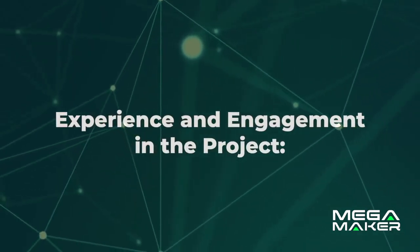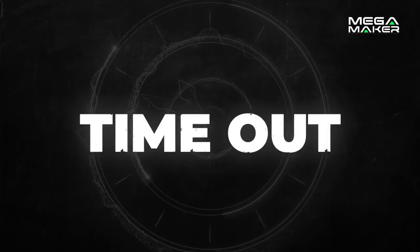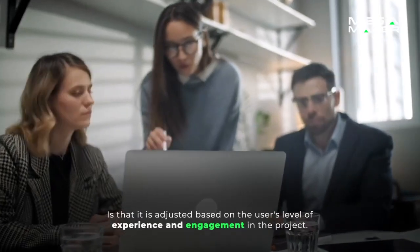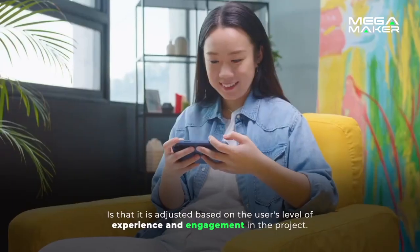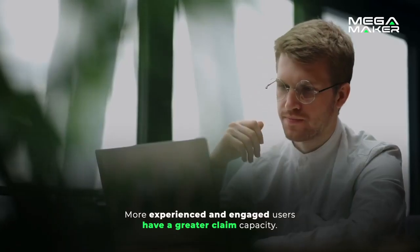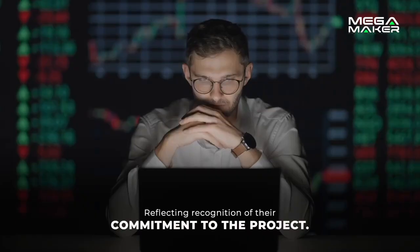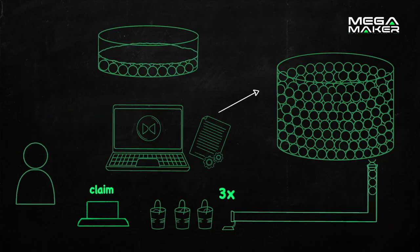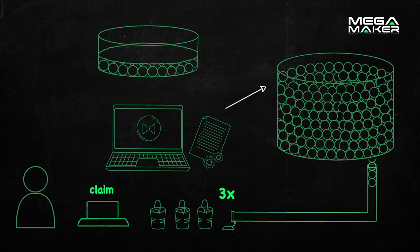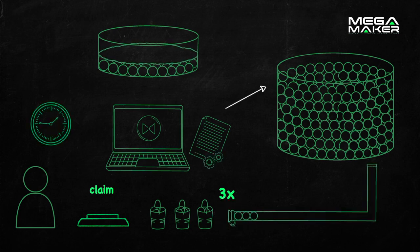A distinctive feature of the timeout in Mega Maker is that it is adjusted based on the user's level of experience and engagement in the project. More experienced and engaged users have a greater claim capacity, reflecting recognition of their commitment to the project. After the contribution, rewards begin to be generated and users can trigger the claim button at any time. However, once the claim button is activated, it temporarily disables, preventing the same user from making another claim quickly.